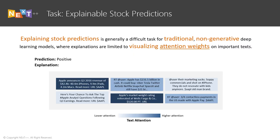Explaining stock predictions is generally a difficult task for traditional non-generative deep learning models, where explanations are limited to visualising the attention weights on important texts. Here we visualise the attention weights learnt by a deep learning model for stock prediction. While the weights can show us which information contributed more to the positive prediction, the user is still required to infer why these information are important.